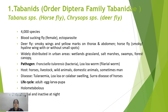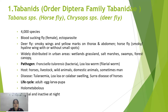First, we will discuss tabanids. They belong to the order Diptera and family Tabanidae, commonly known as horse fly or deer fly, with zoological names Tabanus and Chrysops. There are about 4,000 species — all blood-sucking flying females which are ectoparasitic. Deer flies are marked by smoky wings and yellow markings on the thorax and abdomen, whereas horse flies have smoky or hyaline wings with or without small spots.